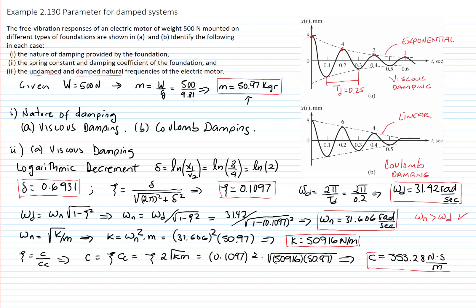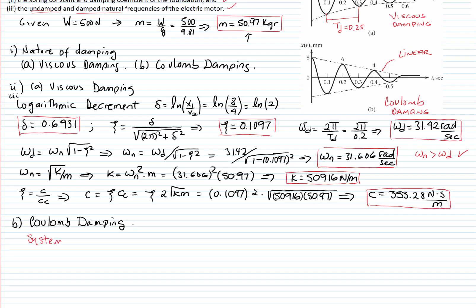Now let's analyze the second curve: Coulomb damping. An important distinction is that under Coulomb damping the system vibrates at the natural frequency, not the damped frequency. So the period read from the curve corresponds directly to the natural frequency. With a period of 0.2 seconds, the natural frequency is 2π over 0.2, which equals 31.42 radians per second.